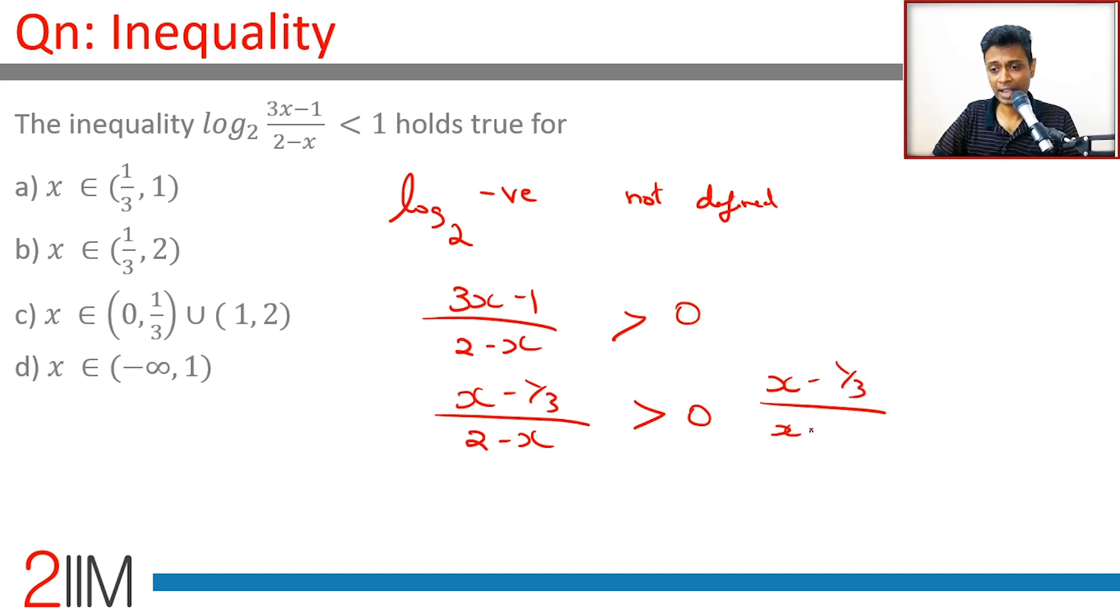(x-1/3)/(x-2) less than 0. For log to be defined in the first place, x minus 1/3—why am I rewriting it as x minus 1/3? 3 times (x-1/3), the 3 disappears. So (x-1/3)/(2-x) is greater than 0.